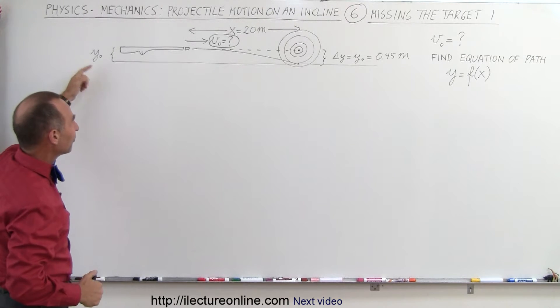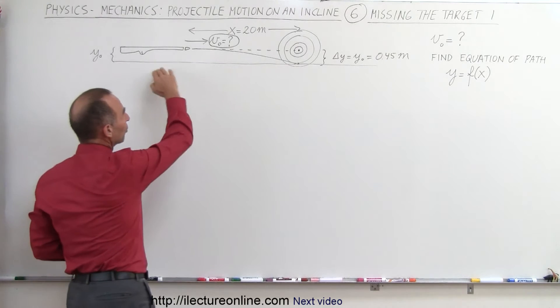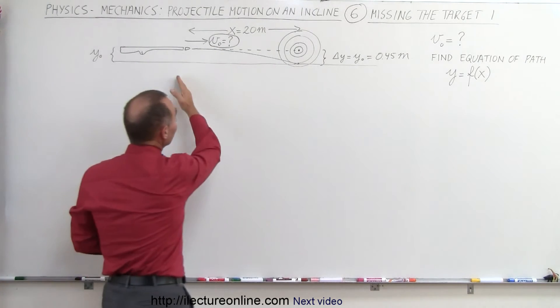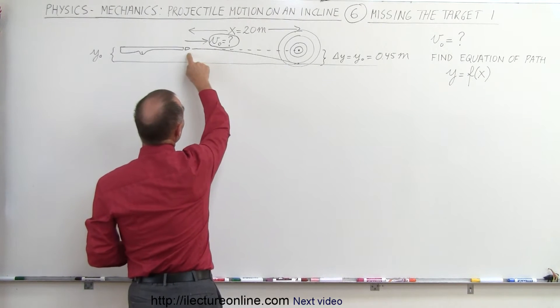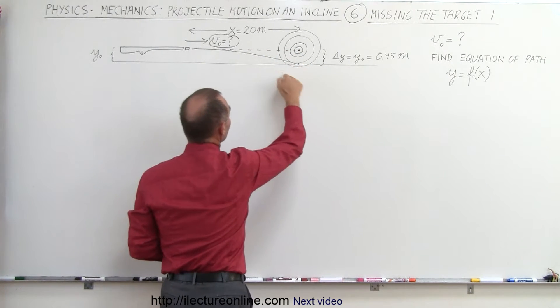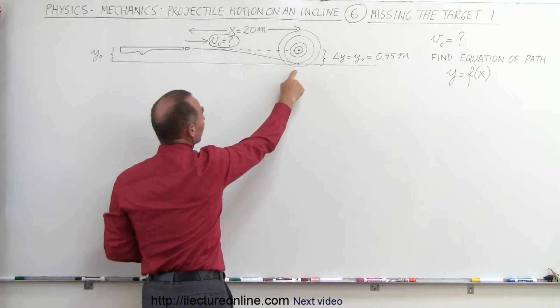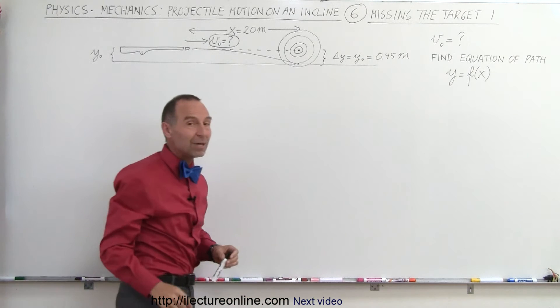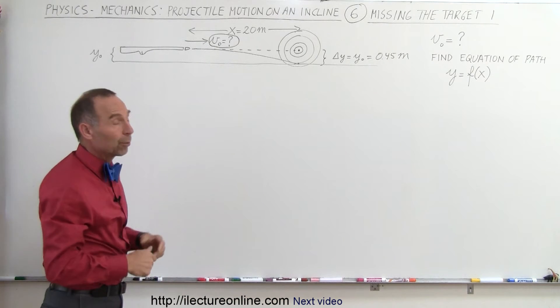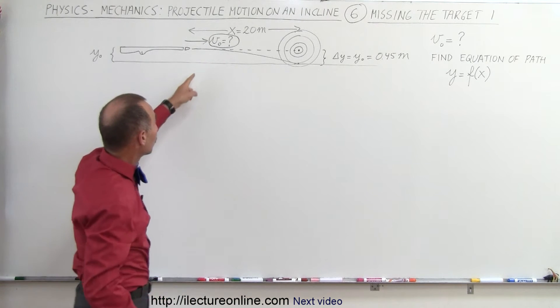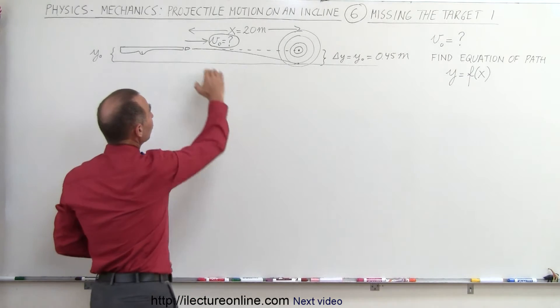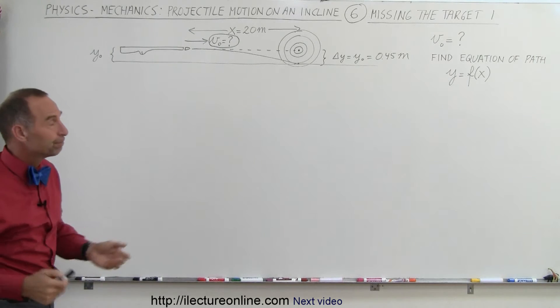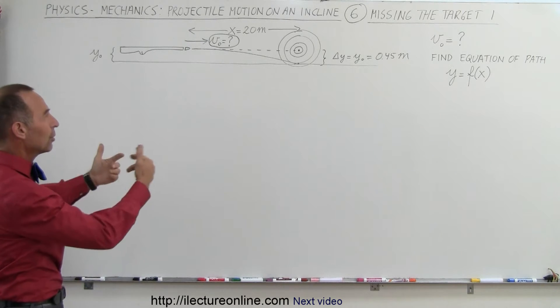So here we have a rifle firing a bullet in a horizontal direction with an unknown initial velocity. The target is 20 meters away, and since we're aiming directly towards the center of the target, of course, because of gravity, the bullet will hit the target below the center at a distance of 0.45 meters below. So what we're trying to do is, first of all, find the initial velocity, and then find the equation describing this parabolic path of the bullet.